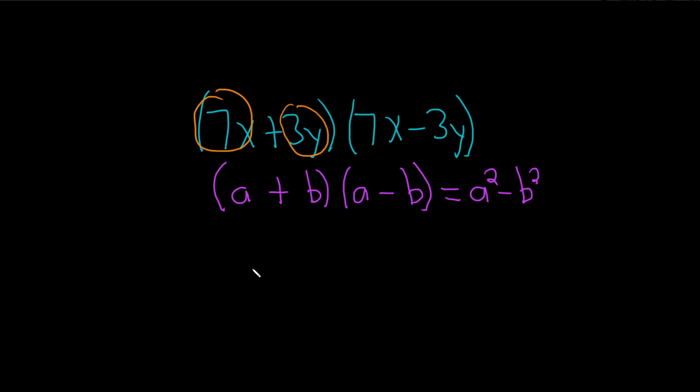So all of this is just equal to 7x squared. That's our a squared. And then minus b squared. So that'll be 3y squared.